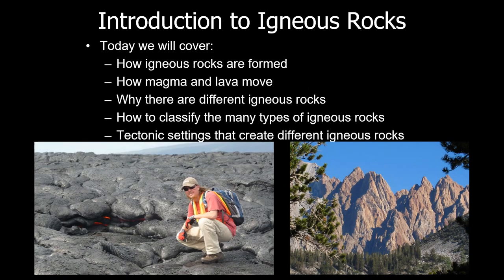Today we're going to talk about a few different things: how igneous rocks are formed, how magmas and lavas move and the distinction between those two terms, why there are different types of igneous rocks in terms of their chemical makeup, how we classify these rocks, and the tectonic settings in which different igneous rocks are created. Plate tectonics will be this underlying theme we always come back to.